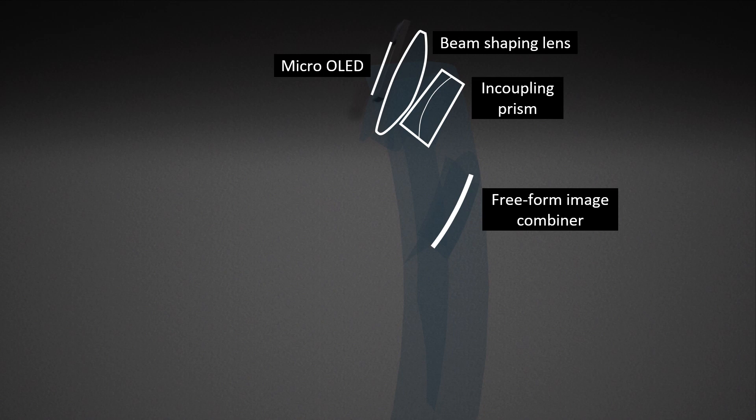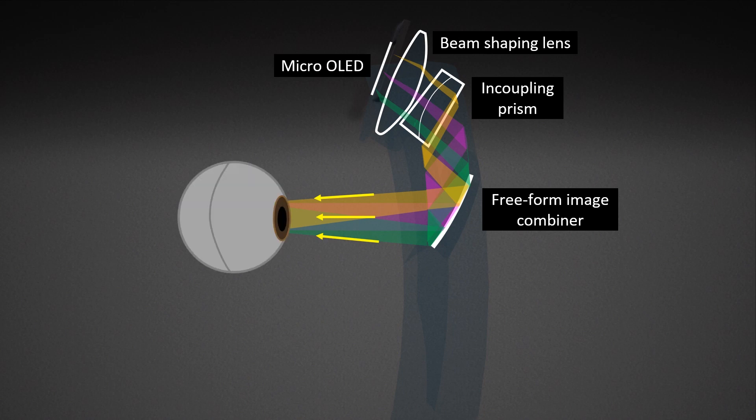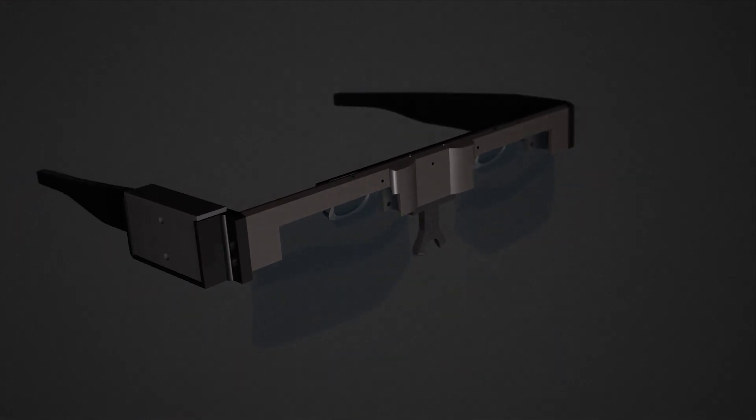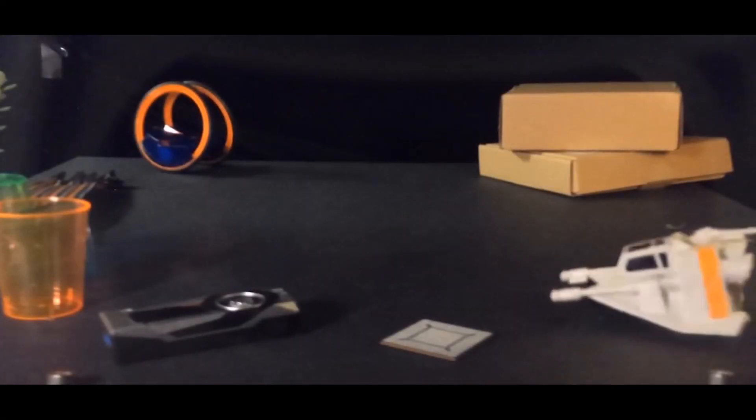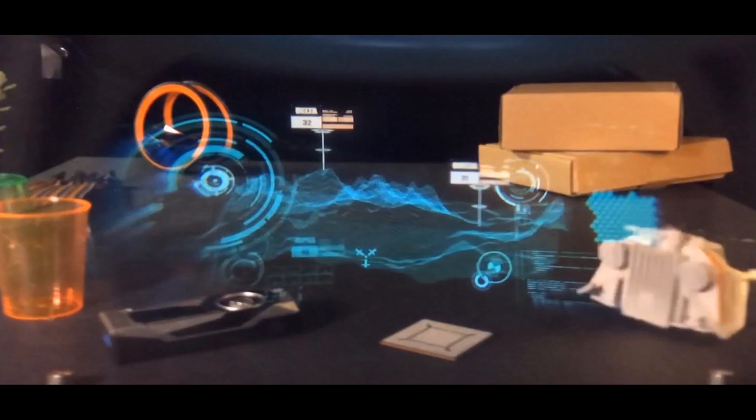The prescription AR display uses a beam-shaping lens and an incoupling prism to relay an OLED image to the eye via total internal reflection and a half-mirror-coated free-form combiner surface. Our prototype corrects the viewer's vision while delivering an augmented image located at a fixed focal depth.